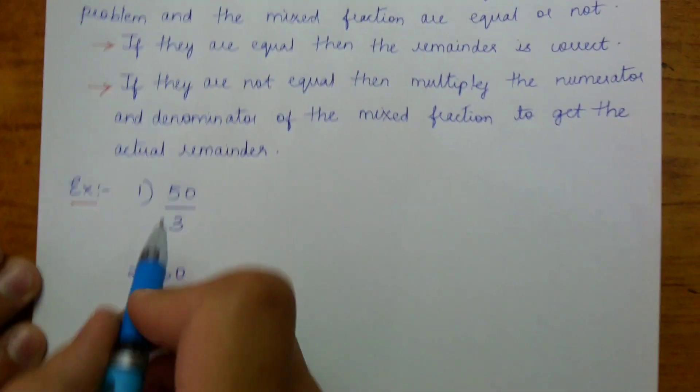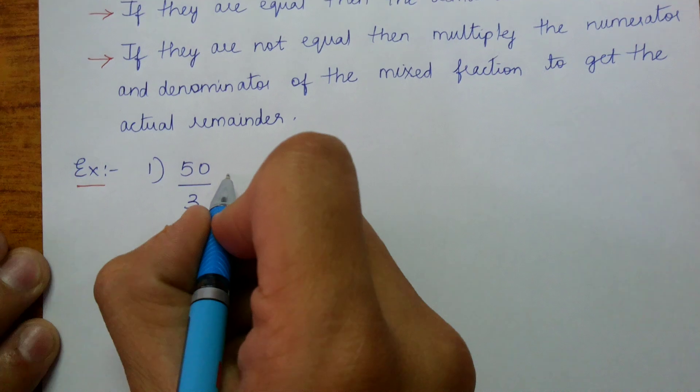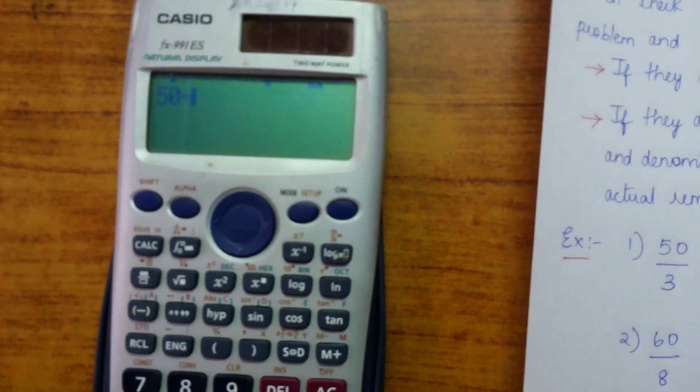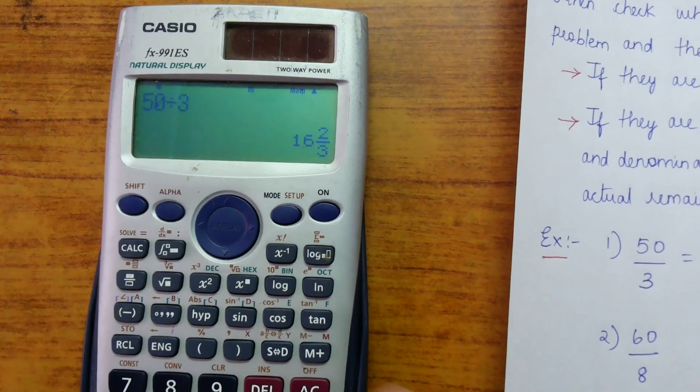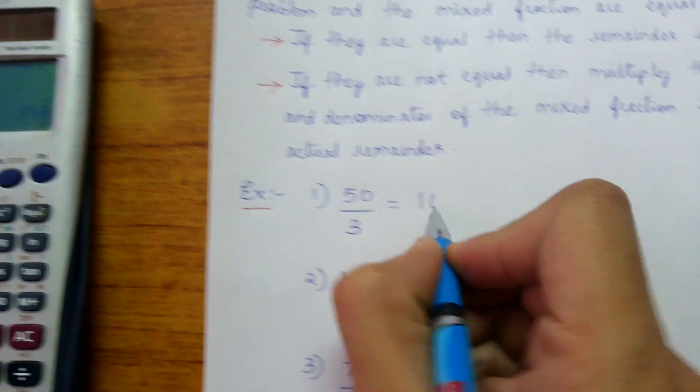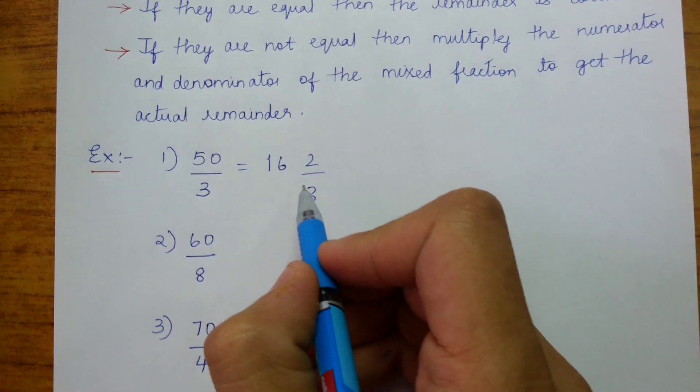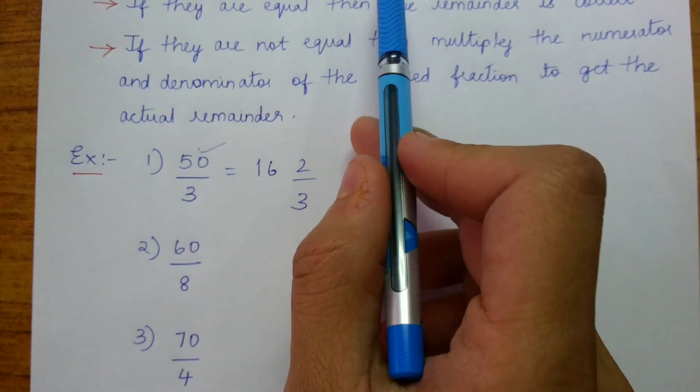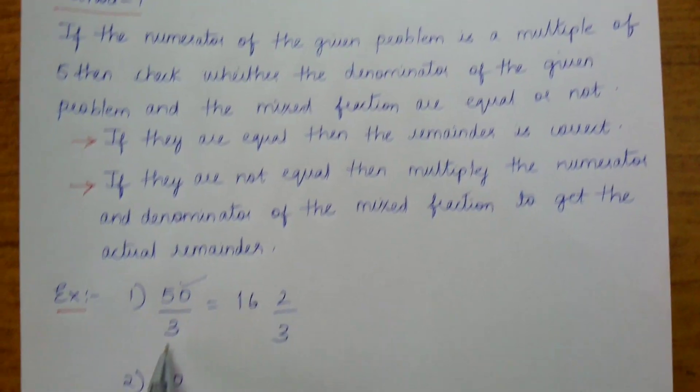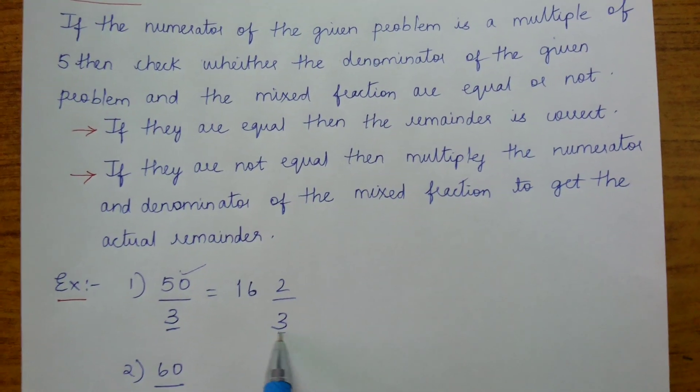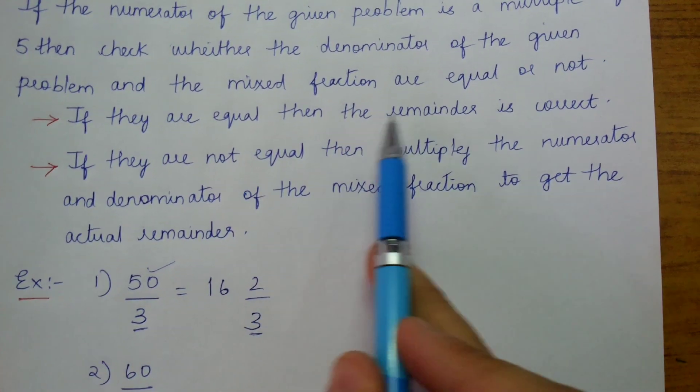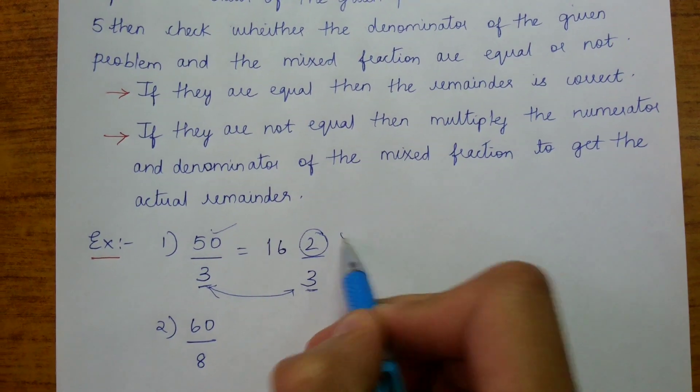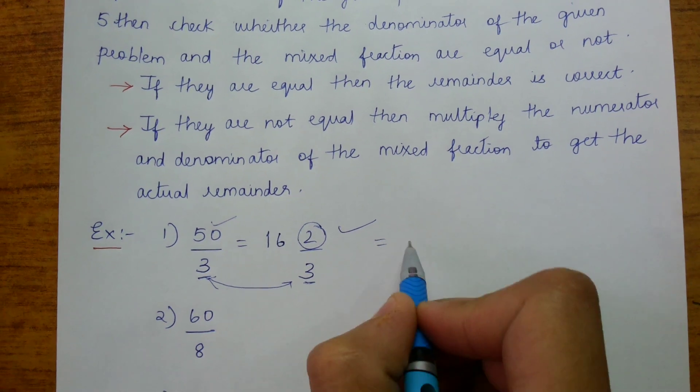So we will see this concept using these problems. Here I have a problem that is 50 by 3. I am going to calculate it in my calculator. So I am calculating 50 divided by 3. I am finding the modulus and I got 16 2 by 3. So we are using our method. Here 50 is a multiple of 5. We should check the denominator of the given problem and the mixed fraction. This is the denominator of the given problem and this is the denominator of the mixed fraction. If they are equal, then the remainder is correct. Since these both are equal, the remainder 2 is correct and the remainder of 50 by 3, that is modulus, is 2.